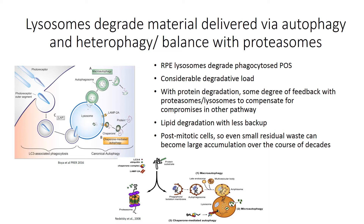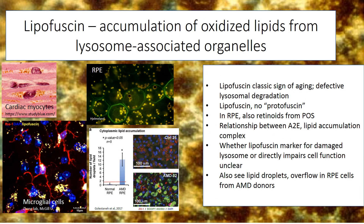If you think about RPE cells with their intense degradative load of rather nasty lipids — soft lipids from all the disc membranes — over many decades we do see an accumulation of partially degraded and oxidized material accumulating as lipofuscin. Lipofuscin refers to accumulations of oxidized lipids from lysosomal-associated organelles. It is a classic sign of aging and reflects defective lysosomal clearance of lipids. We can see lipofuscin in a variety of cell types, including cardiac myocytes and microglial cells.